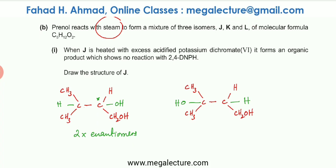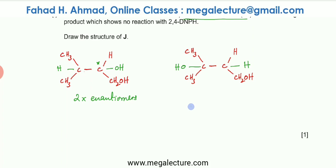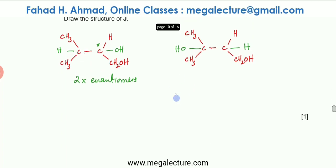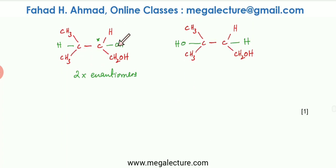Part B(i) states that when J is heated with excess potassium dichromate(VI) it forms an organic compound. We're going to try to oxidize both molecules. Looking at the first molecule, one OH is a tertiary alcohol and the other OH is a primary alcohol. Tertiary alcohols don't get oxidized; primary alcohols get oxidized to carboxylic acids.